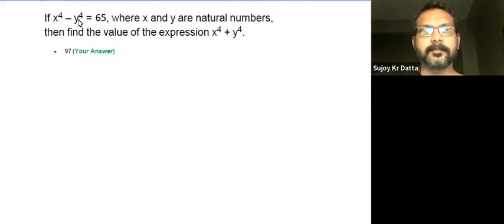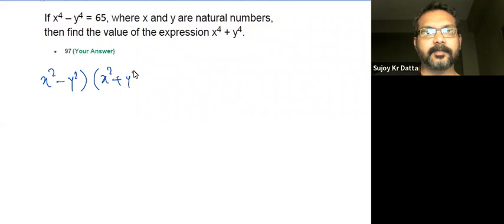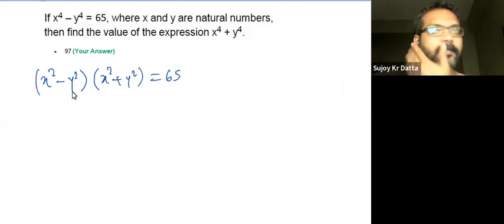In this question, x to the power 4 minus y to the power 4 equals 65. We factorize this as x squared minus y squared times x squared plus y squared equals 65, which can be further broken down.